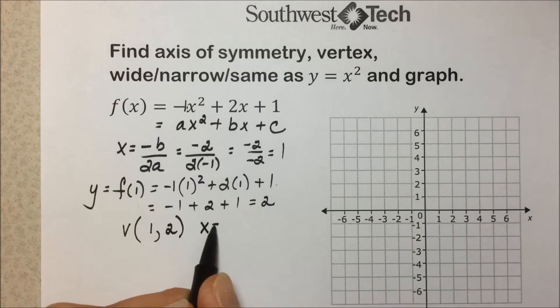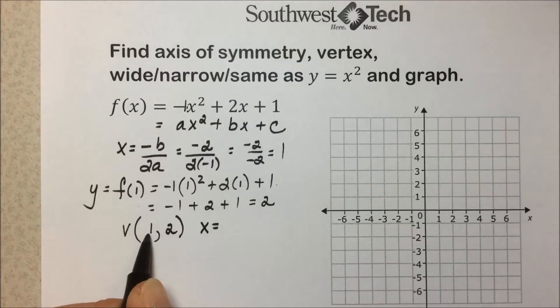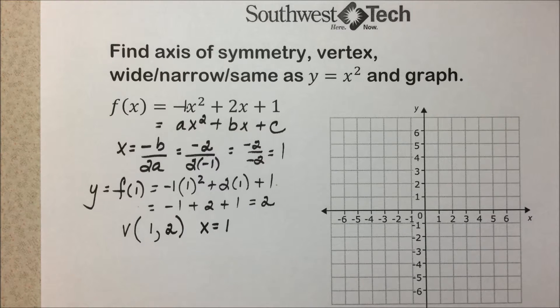The axis of symmetry is x equal the x value of our vertex. It always runs through the vertex, so there's our equation for the axis of symmetry. To determine the shape of the parabola, we need to look at a.